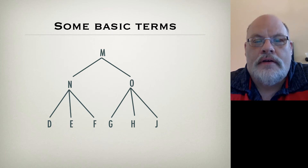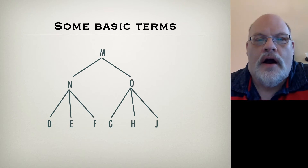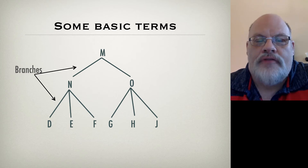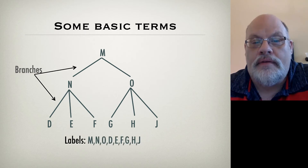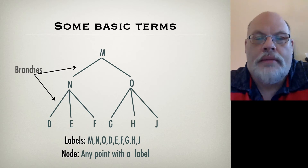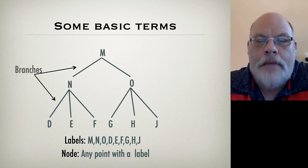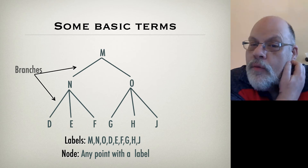The first thing to notice about the structure is it's hierarchical in that M is higher up and contains N and O. Those hierarchical relationships are represented with what we call branches — unsurprising, given that this is a tree. The branches connect to things that we call labels, so M, N, O, etc. are the labels of this tree. The labels mark what are called nodes. Nodes are any point with a label. Take for example the letter N: N sits at the top of three lines and at the bottom of another that comes from M. This N labels the node that connects those three categories with the M higher up.